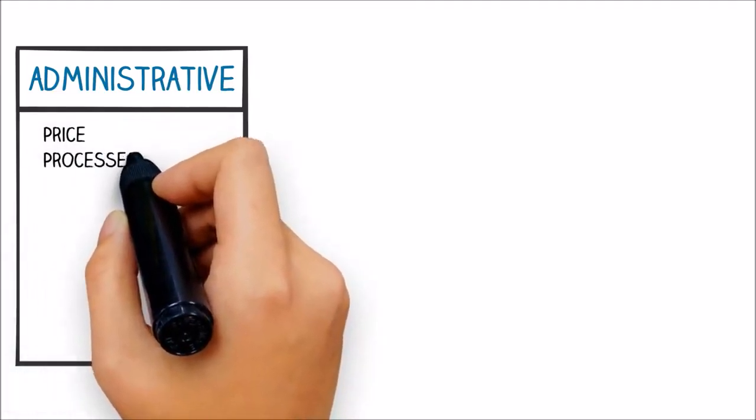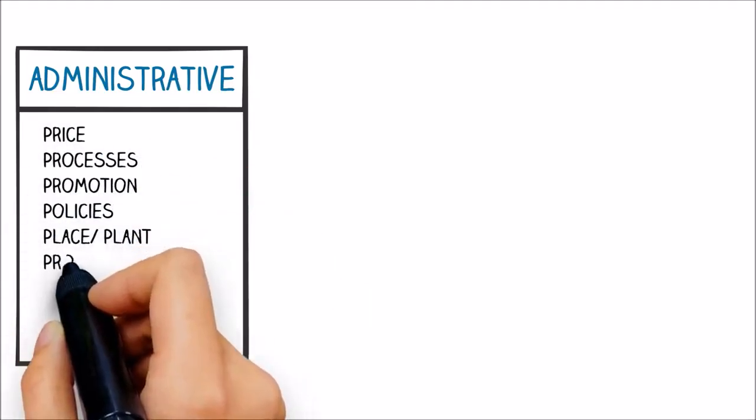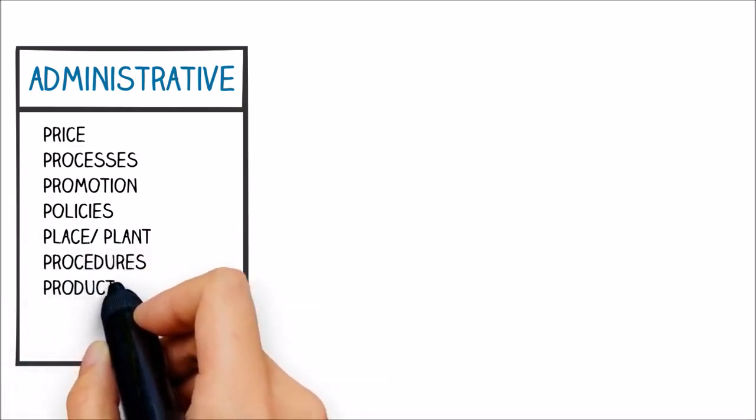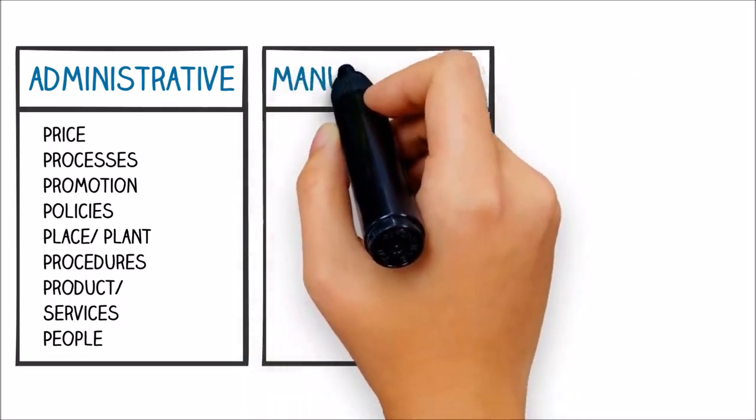In the Administrative category, you have Price, Processes, Promotion, Policies, Place, Procedures, Product or Services, and People.